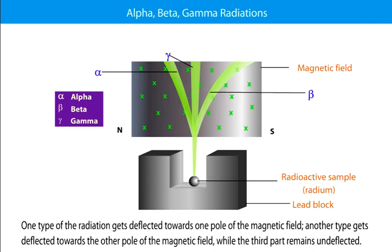Here one type of the radiation gets deflected towards one pole of the magnetic field. Another type gets deflected towards the other pole of the magnetic field while the third part remains undeflected.